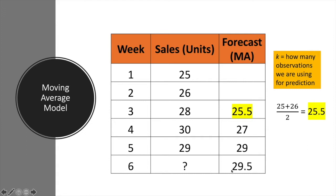So now, based on the moving average model, I am forecasting that the sales for week 6 will be 29.5. This is the moving average model, and in this case I've used K equal to 2.